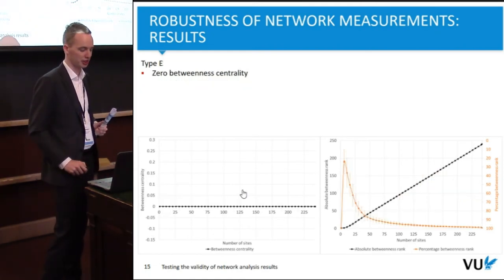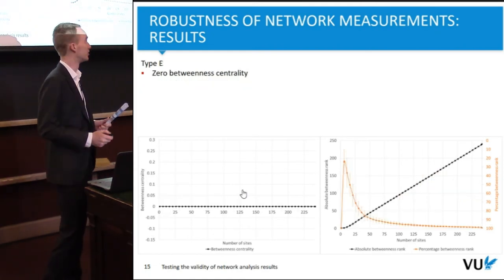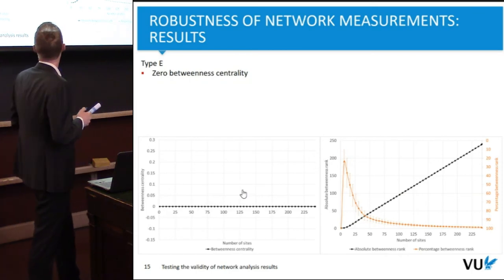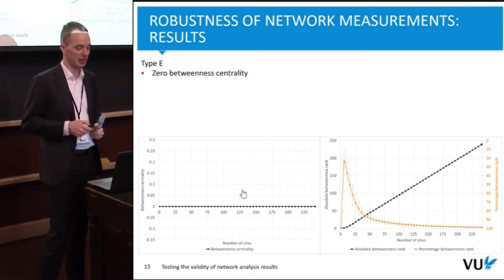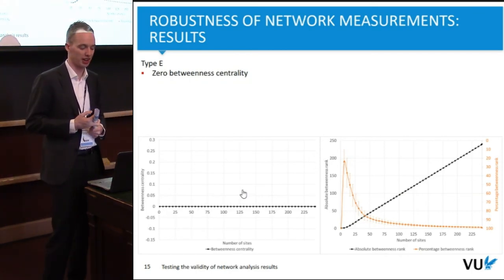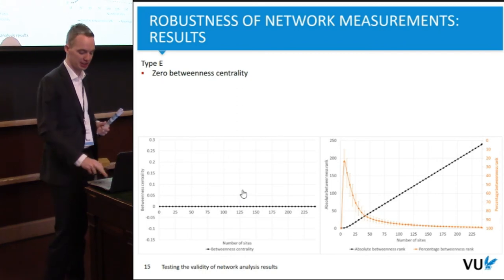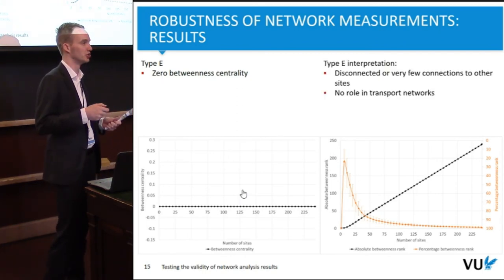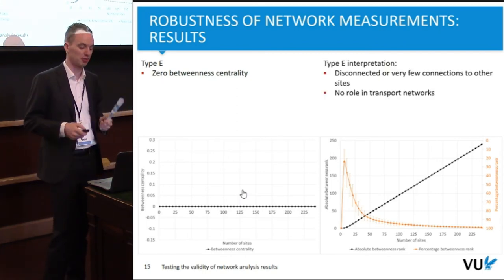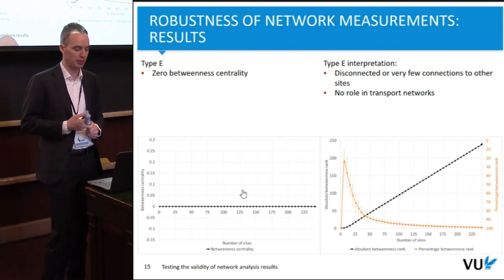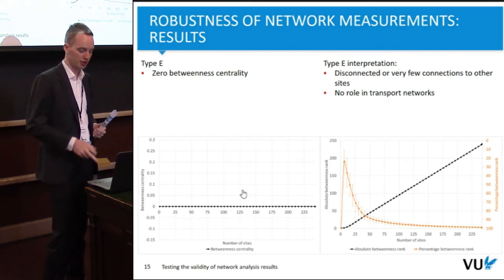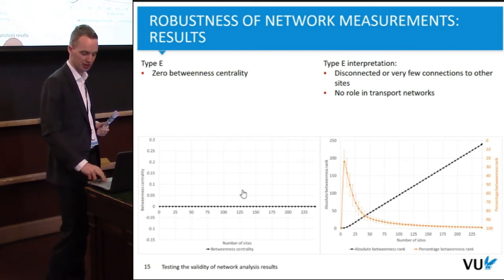There is also a type characterized by zero betweenness centrality, representing sites that are either disconnected or have very few connections and are not traveled as shortest paths. These sites have no role in transport networks.